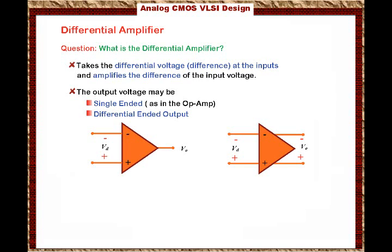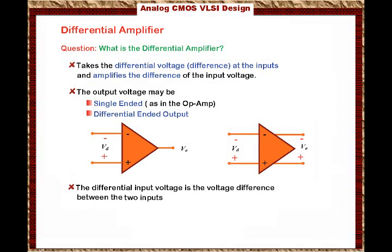The differential input voltage in the differential amplifier — remember we stress this in the differential amplifier — is the voltage difference between the two inputs, specified as Vd equals V-plus minus V-minus, where V-plus is the voltage at the plus polarity and V-minus is the voltage at the minus polarity. Essentially, the differential input voltage equals the voltage difference across the input.